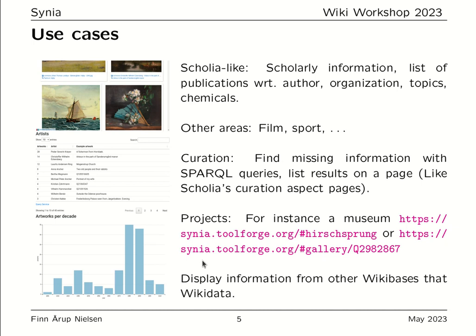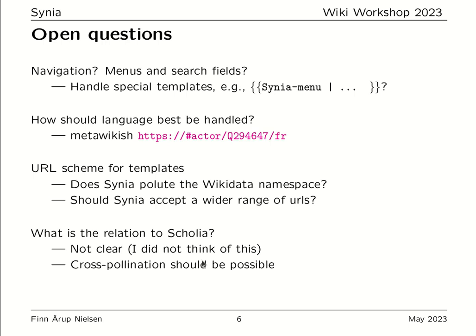Not only can Cynia display information from Wikidata, but also from other Wikibases. Open questions include navigation — it's not easy to navigate in Cynia, and there needs to be some kind of menus to switch between different Cynia pages. Although Cynia can display information in different languages, it's not clear how best to do this or how URLs should be structured to make switching easy. There are also questions around the URL scheme for templates and whether Cynia pollutes the Wikidata namespace. The relation to Scolia is also not quite clear, though hopefully some cross-pollination between Cynia and Scolia will be possible.